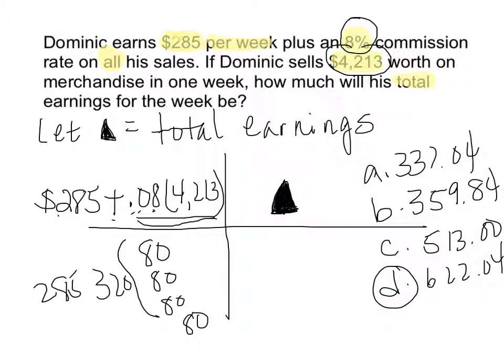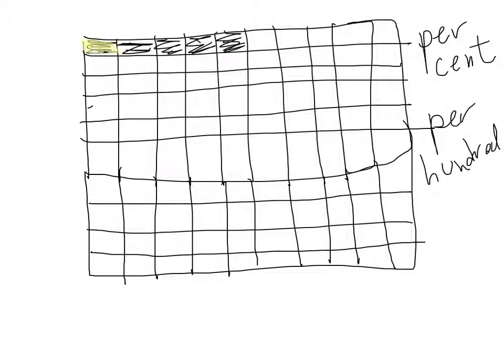Now let's do a little review on percent. Percentage means per hundred — per cent is the same as per hundred. Per means for every. So for every hundred pieces, this is how many you get. If you have 5%, you get five out of a hundred pieces. Five percent is not a whole lot — cut into a hundred pieces, per every hundred, you get five.